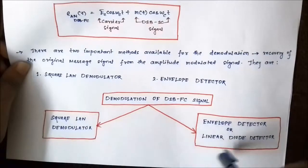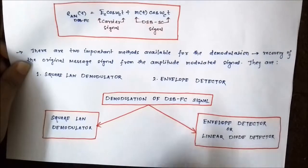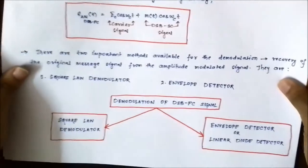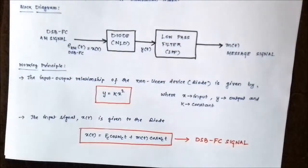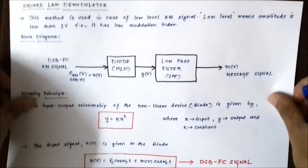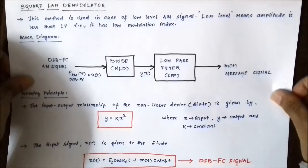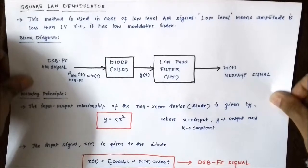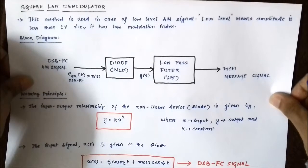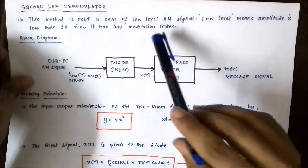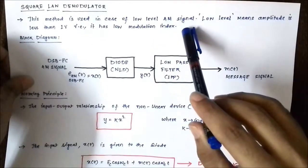We will be taking up these two parts separately. So in today's video we will be discussing about the square law demodulator. Now, one of the conditions for the use of this demodulation method is that it is applicable for low amplitude level DSB-FC signals. The low level means that the amplitude should be less than 1 volt, or the modulation index is less.